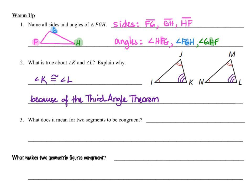That leads right into question three, which says, what does it mean for two segments to be congruent? If two segments are congruent, we might say it in a lot of different ways, but basically, it means that they are the same length. And that leads us right into the next question, which says, what makes two geometric figures congruent?